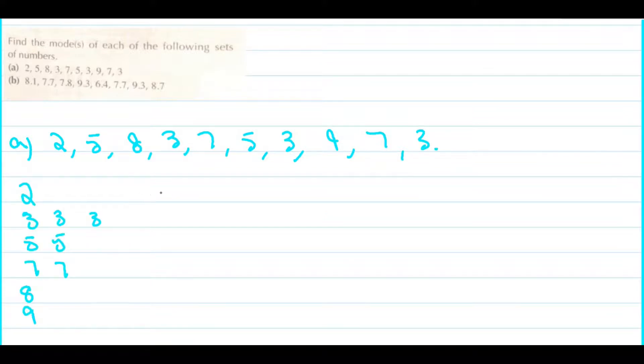As you can see, 2 has occurred only once, whereas 3 has occurred thrice, 5 has occurred twice, 7 has occurred twice, 8 has occurred once and 9 has occurred once.